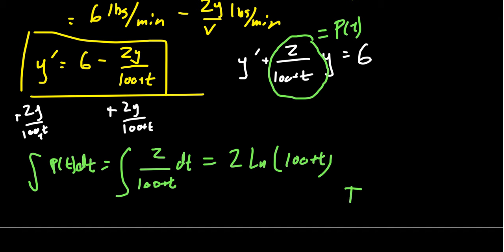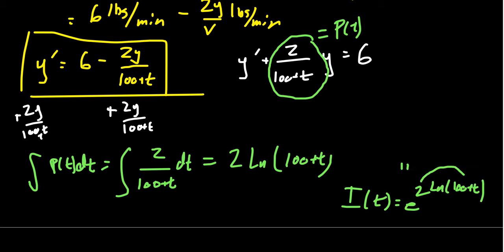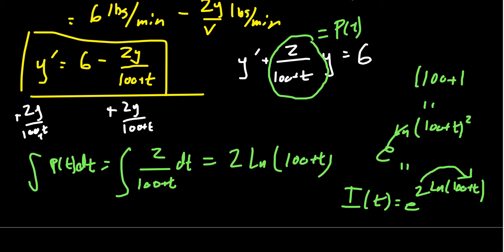Our integrating factor I(T) is going to be e to the 2 times the natural log of (100 + T). We can bring the coefficient 2 inside, getting e to the natural log of (100 + T) squared, in which case the e and the natural log cancel out, and our integrating factor is (100 + T) squared.